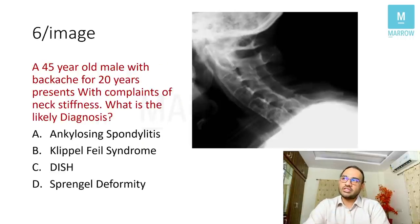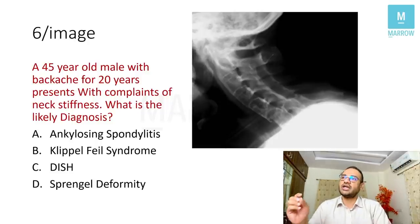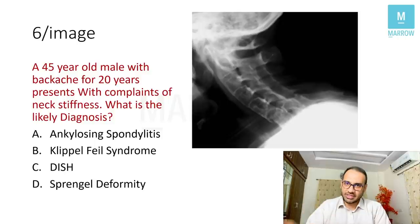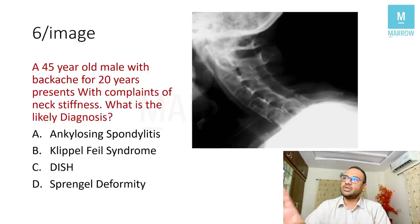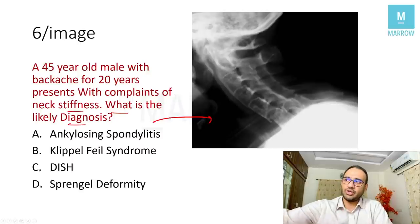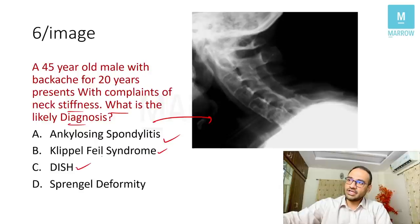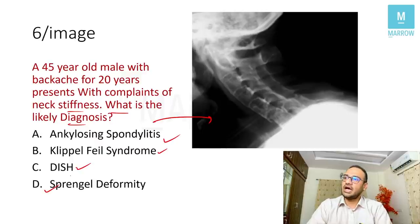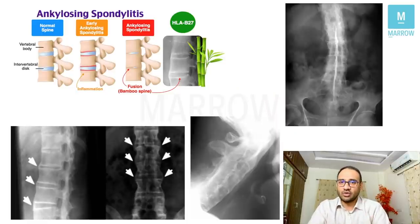A 45-year-old male with backache for 20 years presents with complaints of neck stiffness. The x-ray is shown to help diagnose. Options are ankylosing spondylitis, Klippel-Feil syndrome, DISH (diffuse idiopathic skeletal hyperostosis, also known as Forrester's disease), and Sprengel deformity. Let's start with ankylosing spondylitis.